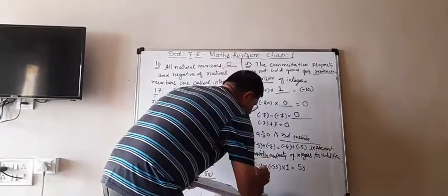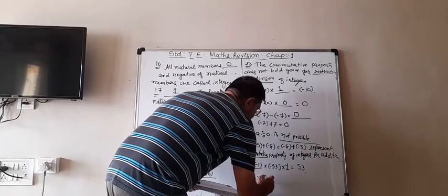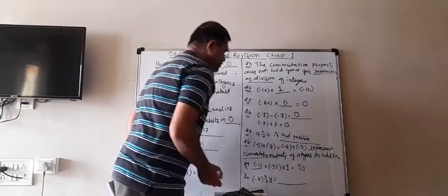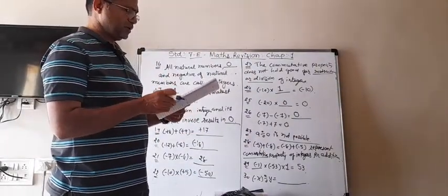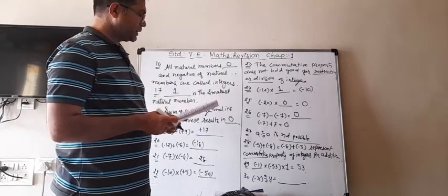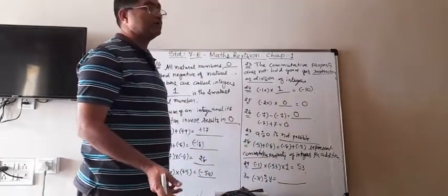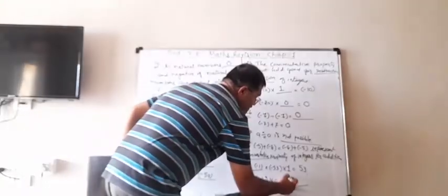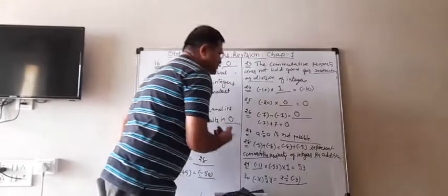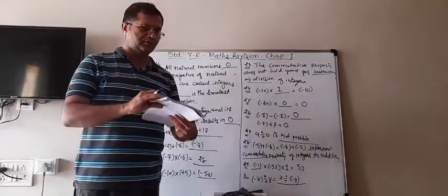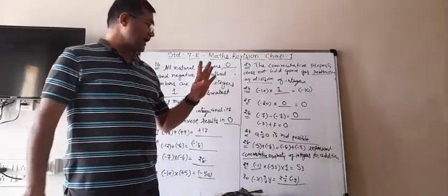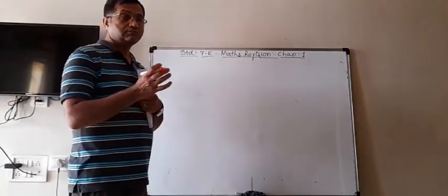Blank 30: (-x) ÷ y = blank. The negative sign can be placed in either the numerator or the denominator and represents the same integer. So the answer is x ÷ (-y). Now we are going to do some multiplications.